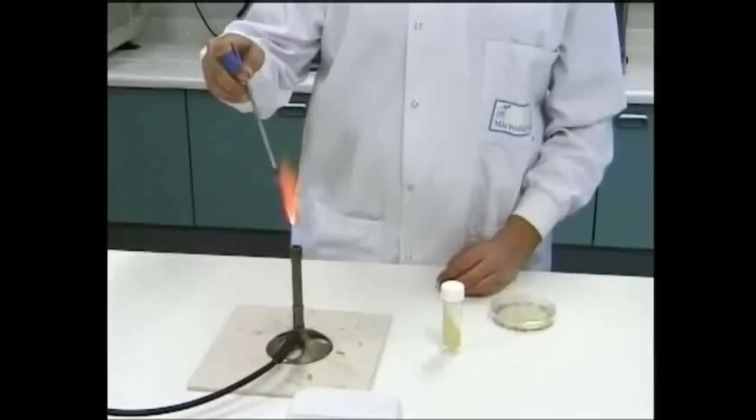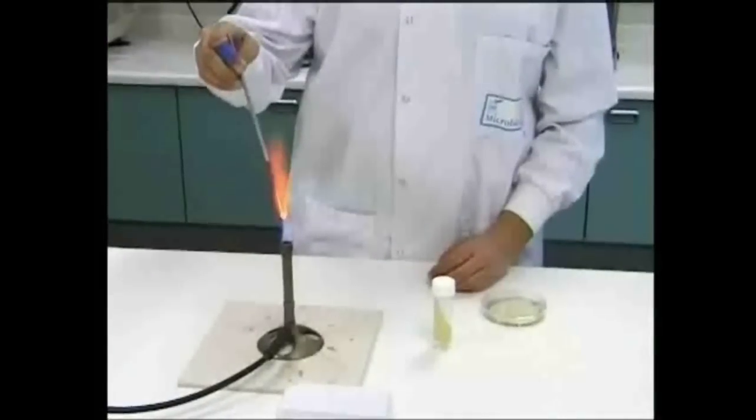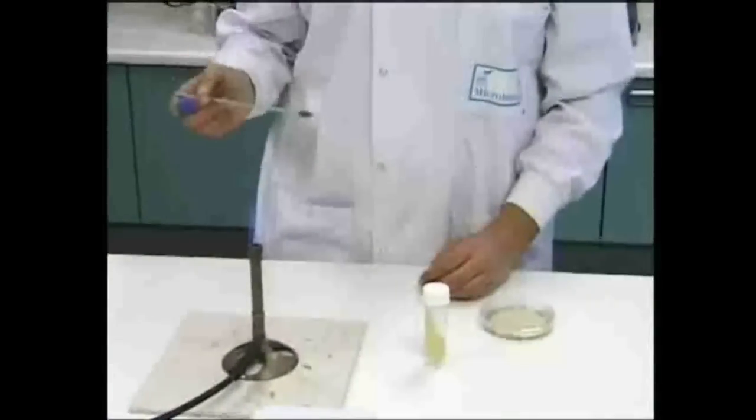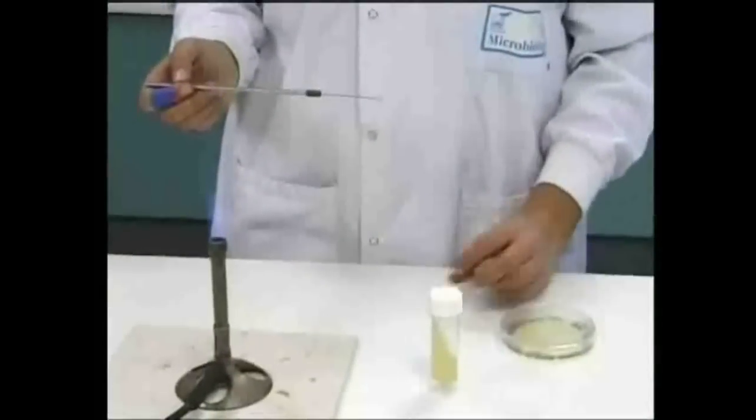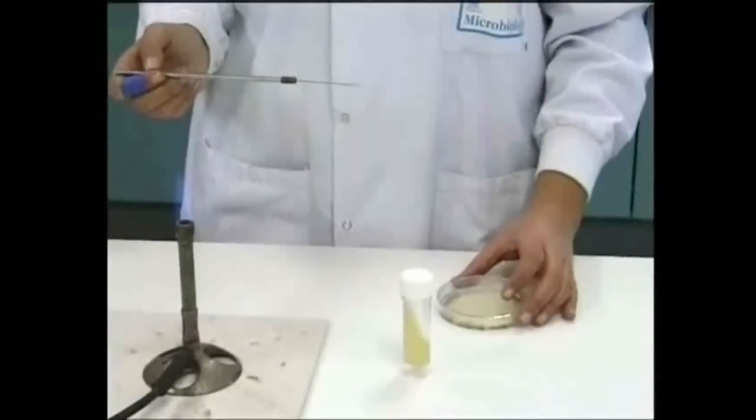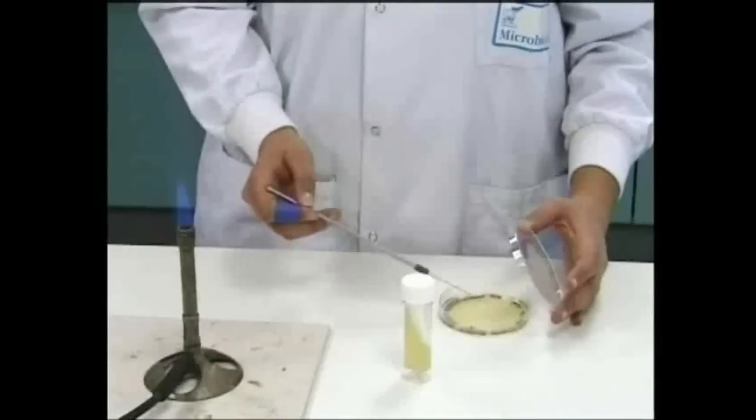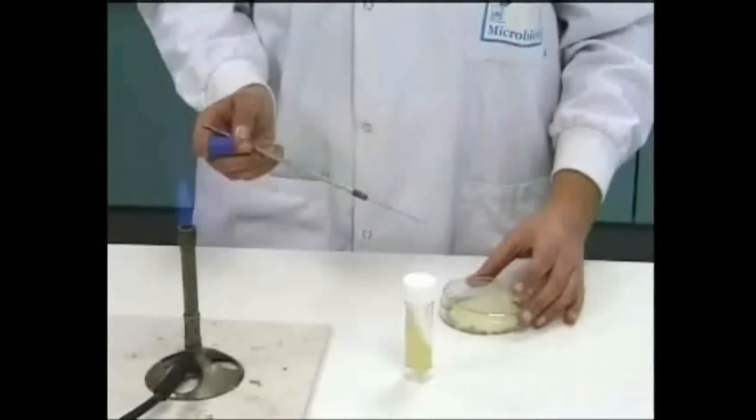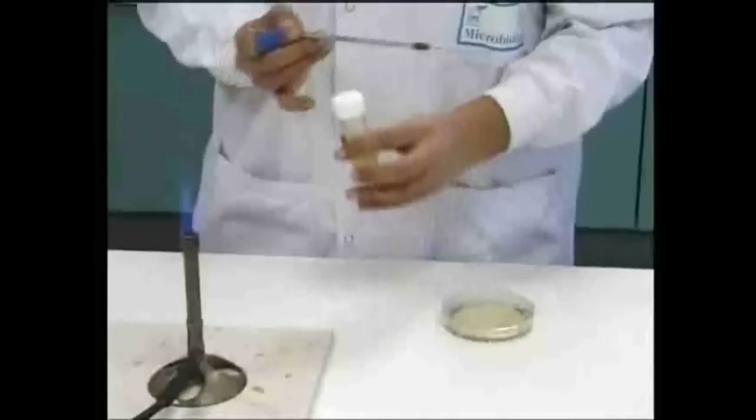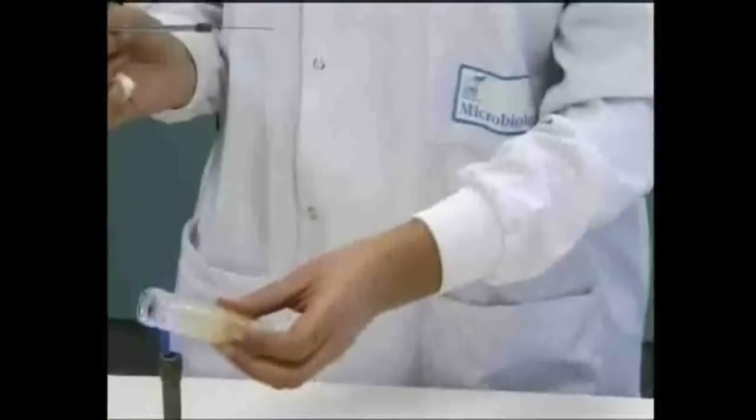Slopes are usually inoculated using a wire loop. The loop is flamed and allowed to cool before one well-isolated colony is picked up.